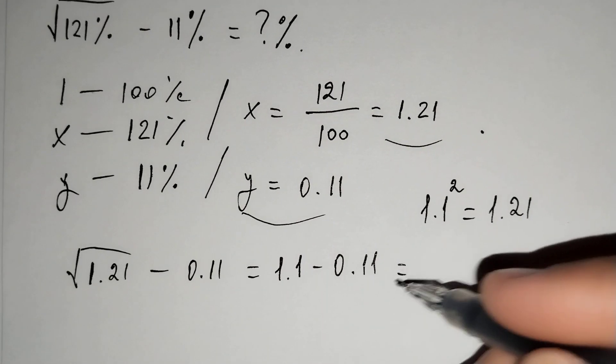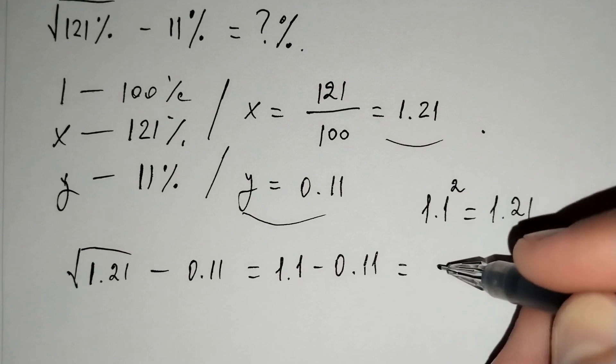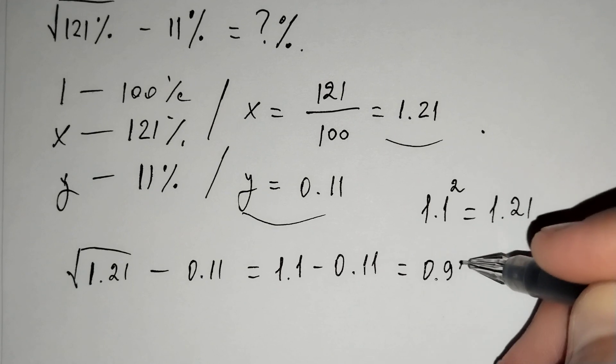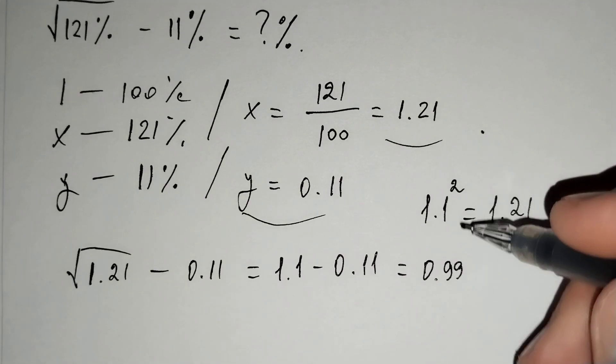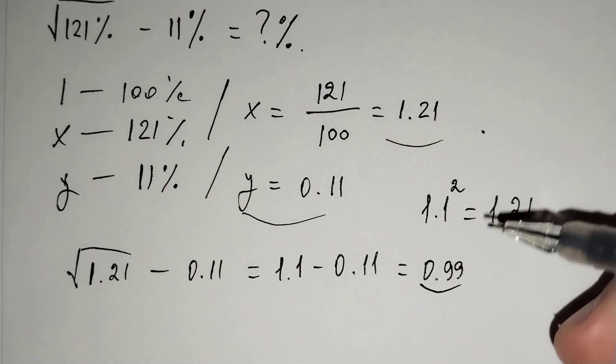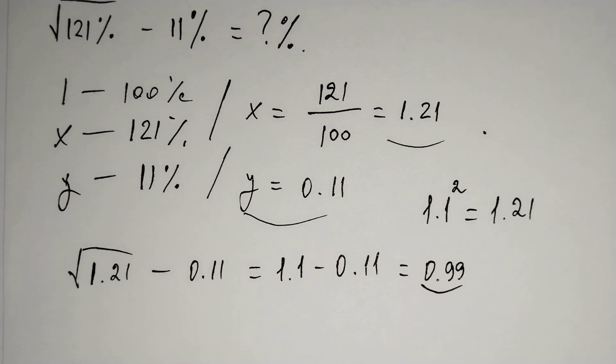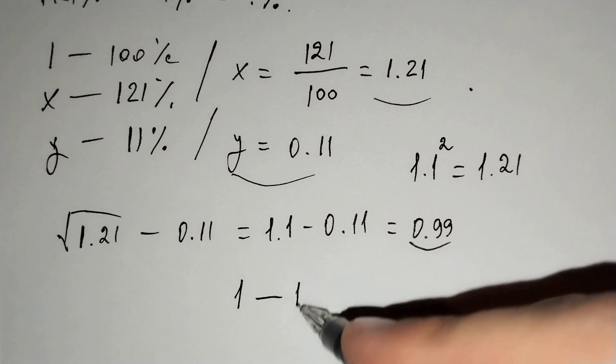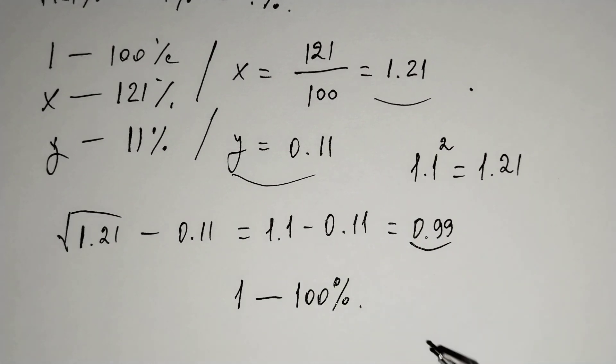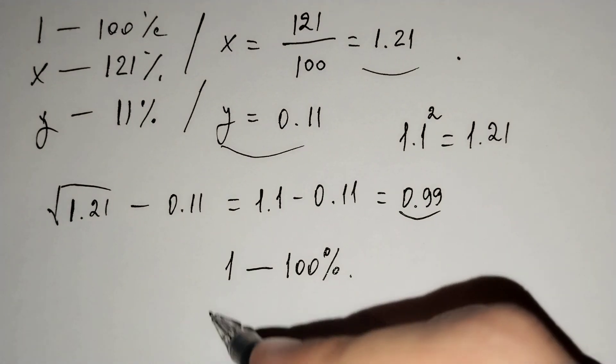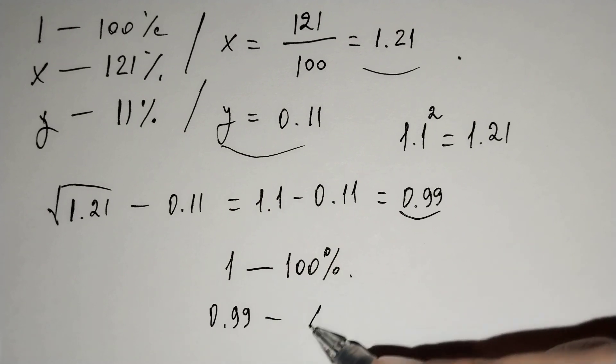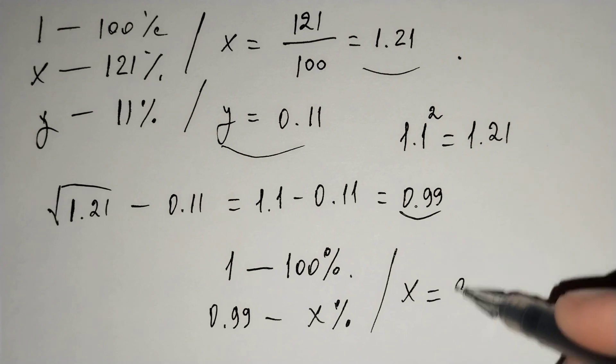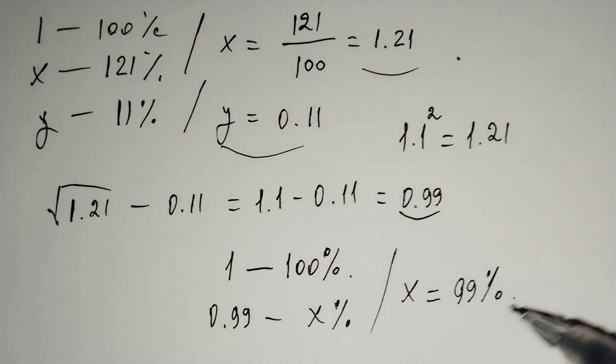And this is equal to 0.99 and this is just a number and we should change it to the percent. 1 equals to 100% and 0.99 is equal to x percent and x equals to 99 percent.